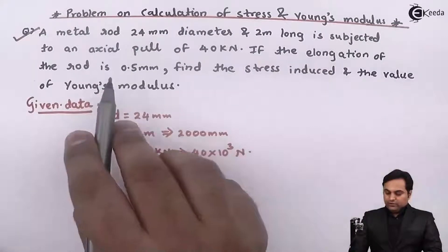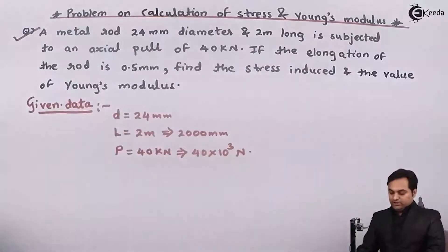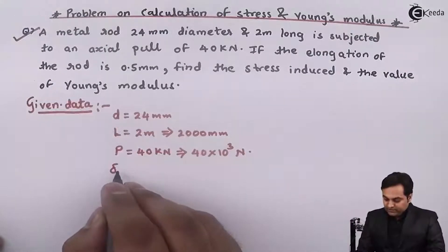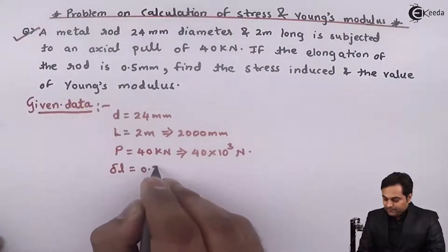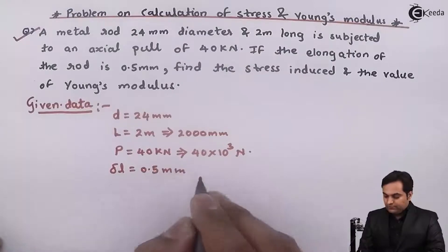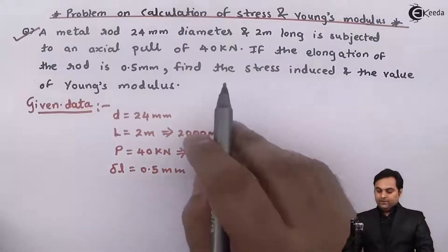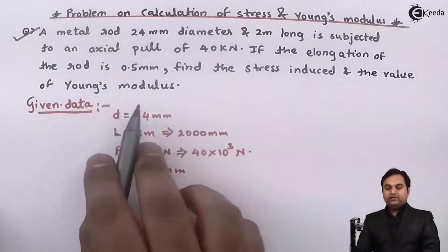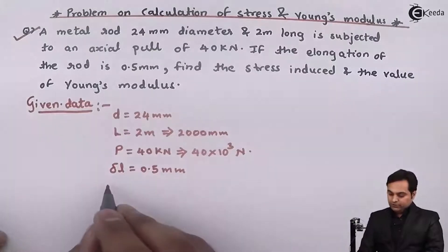If the elongation of the rod is 0.5 mm, elongation means deflection denoted by delta L, elongation is 0.5 mm. Find the stress induced and the value of Young's modulus. So the questions are